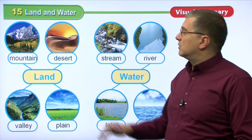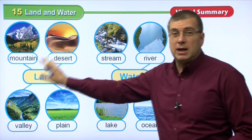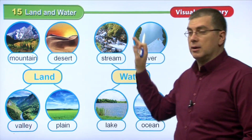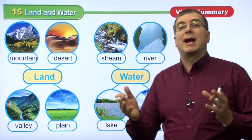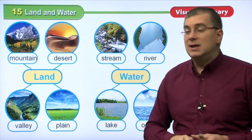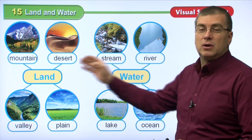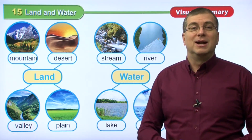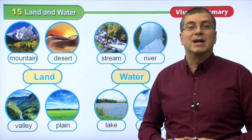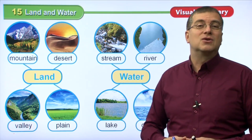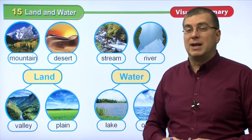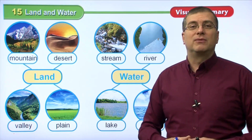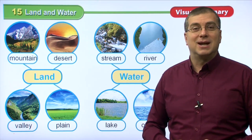In this unit, we've been talking about land and water and the different types of each. We can separate all places on Earth into these two main groups — it's either land or it's water. There are many beautiful and interesting types of both. I hope you've learned a lot in this lesson. We'll see you next time. Take care.